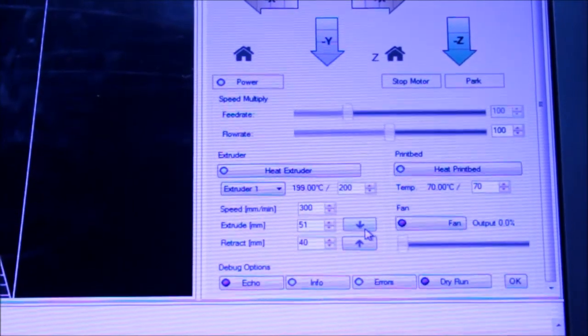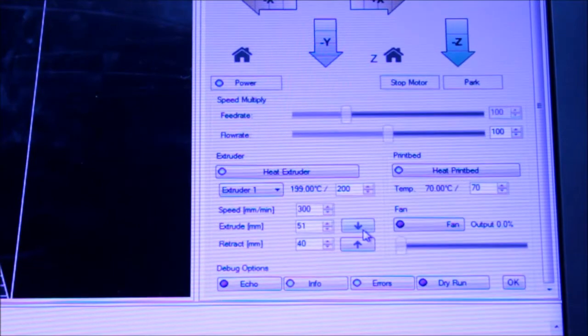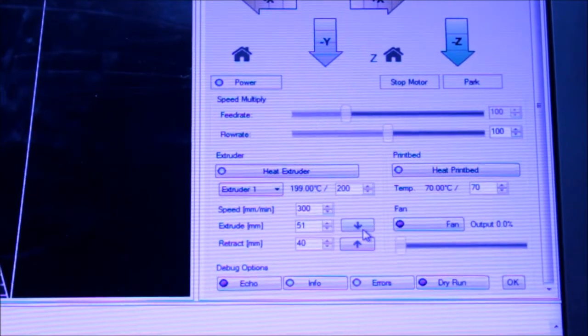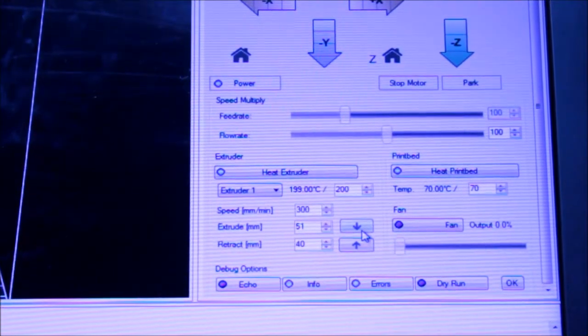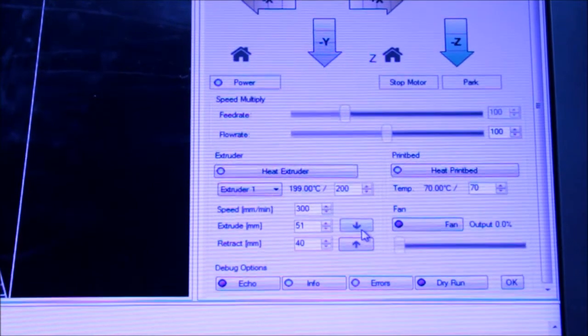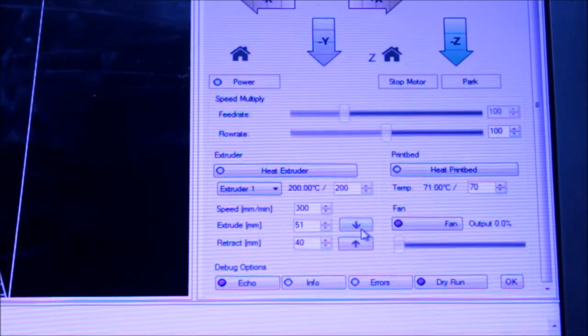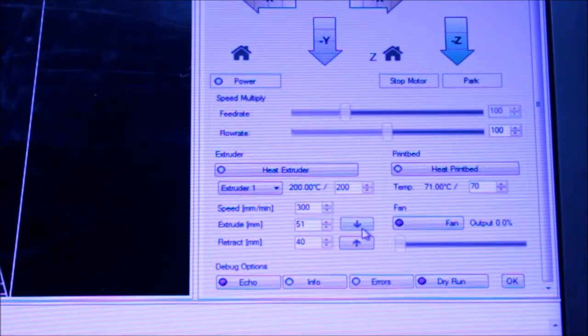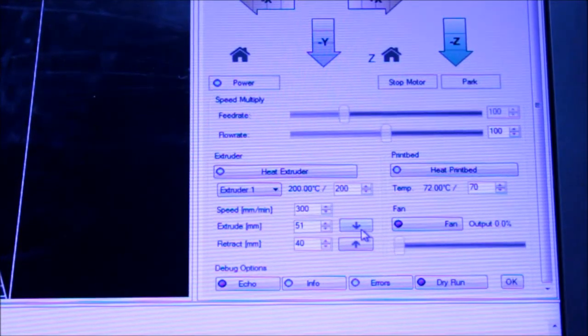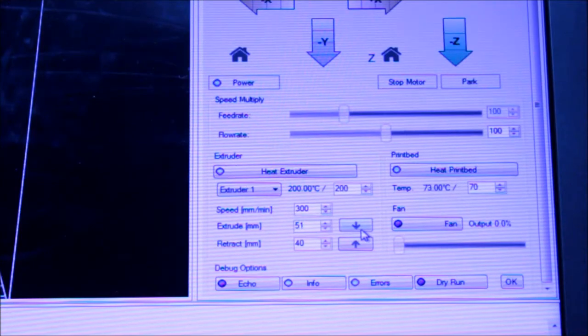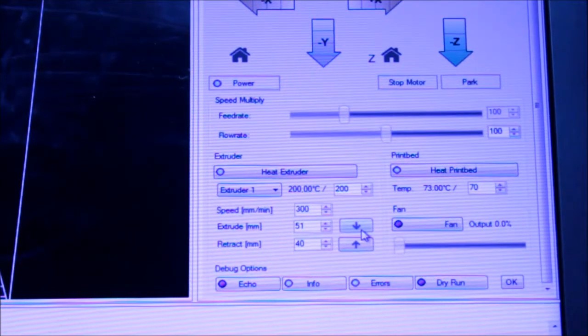The heat extruder is set to 200 degrees centigrade and the speed of the extruder is 300 mm per minute. I have kept the extruder drop length to 51 mm. I'll show you what's happening when we try to extrude the filament.